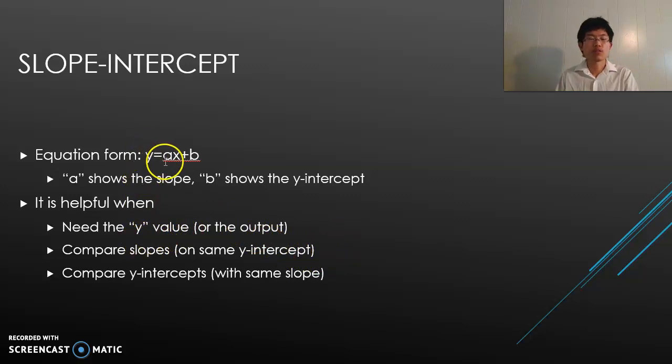Because if you know the input, the x value, you calculate the right-hand side of the equal sign and then you get the y value, the output. You can also do activities like comparing the slopes with the same y-intercept, the b value, or compare the y-intercept with the same slope, the a, and think about what the slope actually does when you change it or when you change the y-intercept.